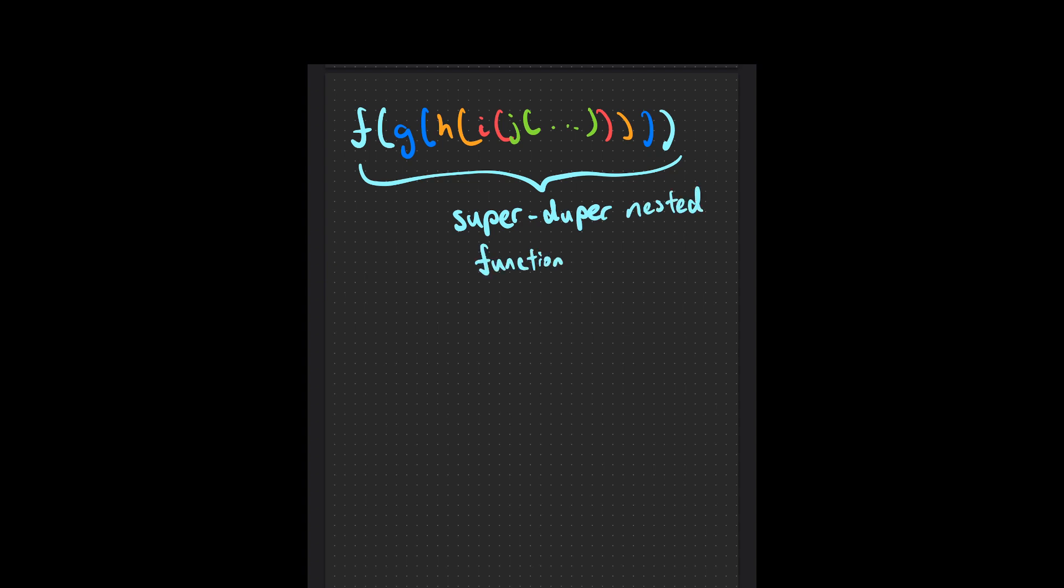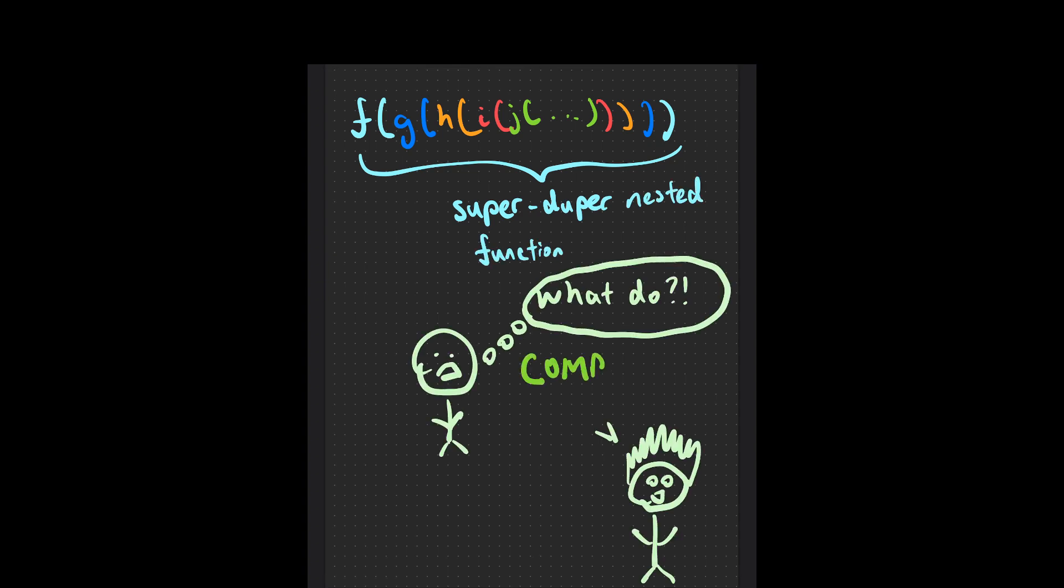Okay, coolio. So now, how do you compute the derivative of super-nested functions? The answer is, you break it down by a thing called a computation graph. What's a computation graph? Let's see an example.